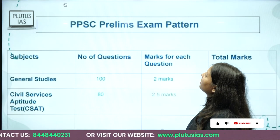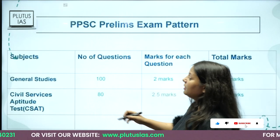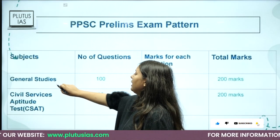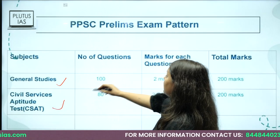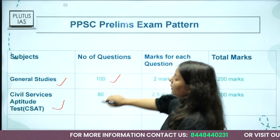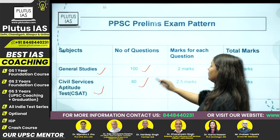This is the Preliminary exam pattern, in which you have two papers. The first is GS (General Studies) and the second is CSAT. In GS you have 100 questions and in CSAT you have 80 questions.